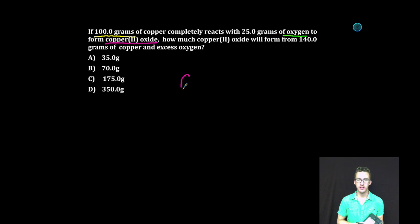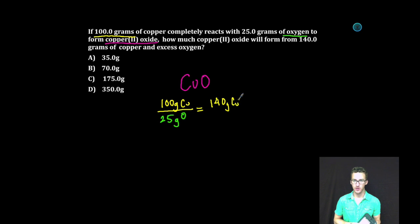All right, so let me write out the formula for copper 2 oxide. C-U-O. We're told that 100 grams of copper completely reacts with 25 grams of oxygen. We want to know how much copper 2 oxide will form from 140 grams of copper and excess oxygen. 140 grams of copper means we're going to need how many grams of oxygen?